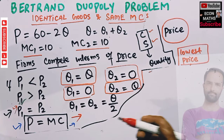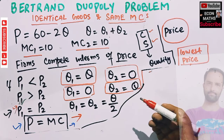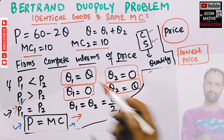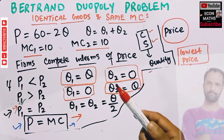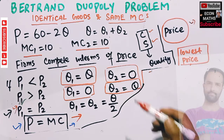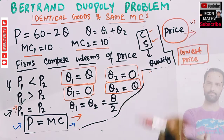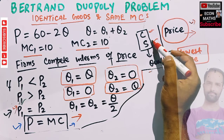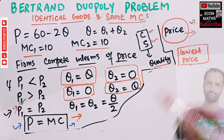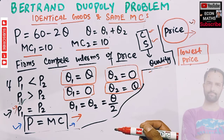Now let's talk about the Bertrand duopoly model with identical goods and same marginal cost. In the earlier two videos I explained the Cournot model and the Stackelberg duopoly model. The difference between the Bertrand model and other oligopoly models is the price — in the Bertrand duopoly, firms compete in terms of price, whereas in the Cournot and Stackelberg models, firms were competing in terms of quantity.